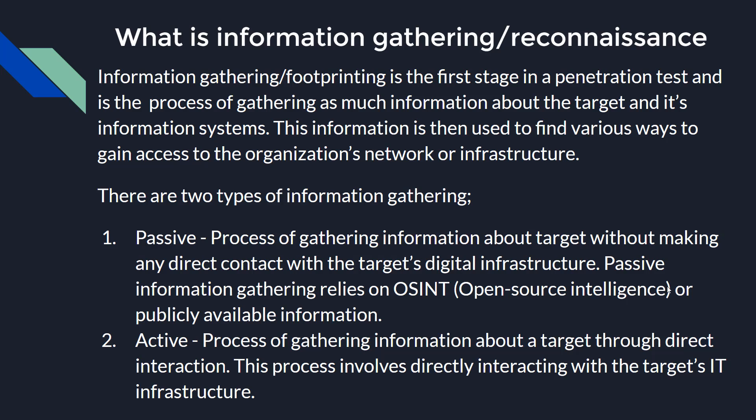We then have active information gathering. This is the process of gathering information about a target through direct interaction. This process involves directly interacting with the target's IT infrastructure or the employees — whether you're performing social engineering, probing the servers, or scanning for open ports on the servers. With passive, you're dealing with information that's already in the public domain, and you're not actively engaging with the target yet.